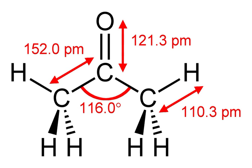By 1852, English chemist Alexander William Williamson realized that acetone was methyl acetyl. The following year, the French chemist Charles Frederic Gerhardt concurred. In 1865, the German chemist August Ciculli published the modern structural formula for acetone. Johann Joseph Loeschmidt had presented the structure of acetone in 1861, but his privately published booklet received little attention.